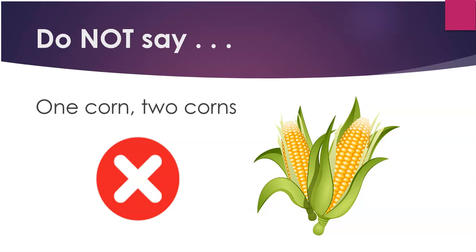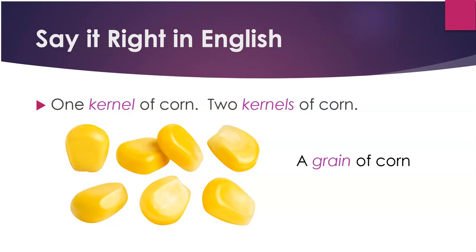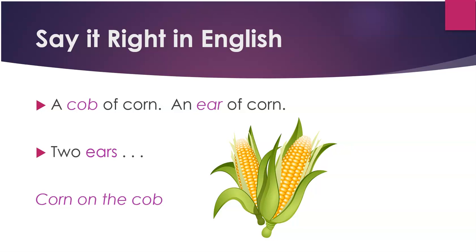Do not say 'one corn' or 'two corns' — that's wrong. Say it right in English: one kernel of corn, two kernels of corn, or a grain of corn. We're counting the individual seeds here. A cob of corn or an ear of corn is a larger unit. We can also say two ears of corn. Sometimes people say corn on the cob.